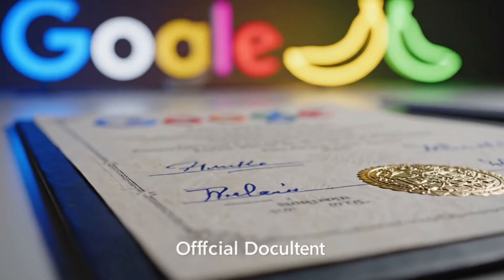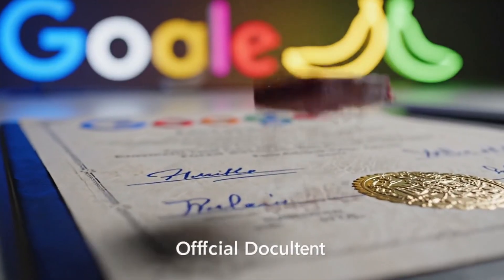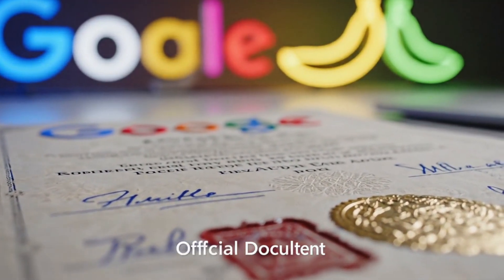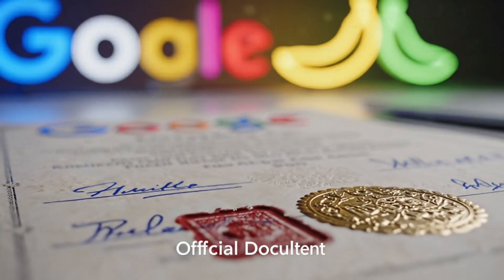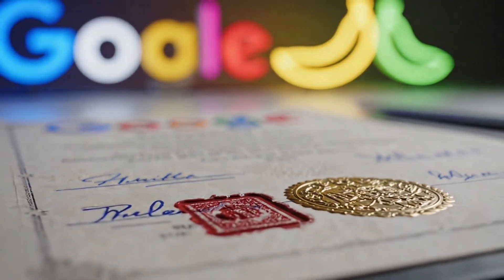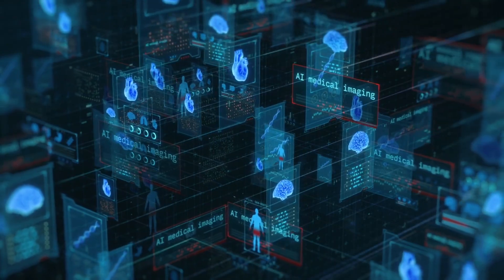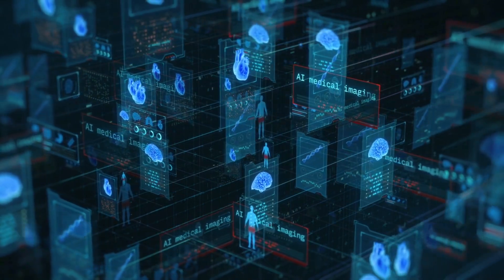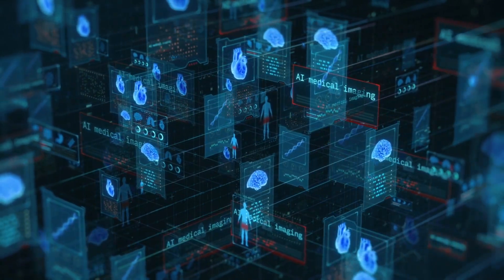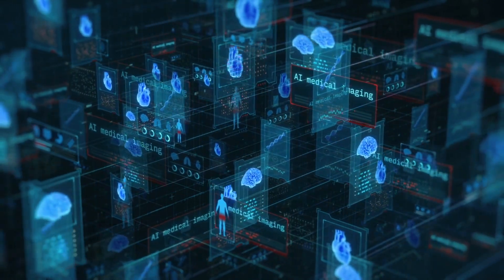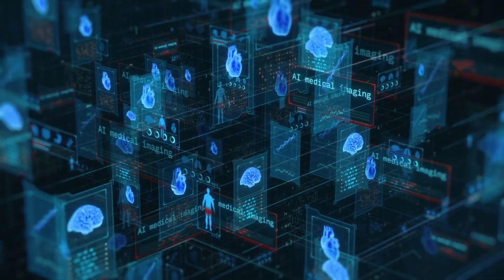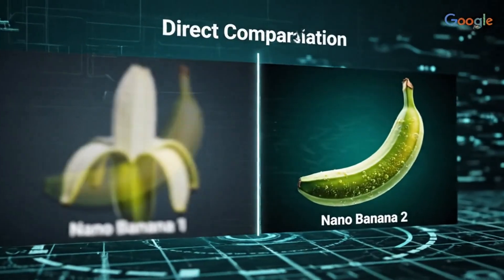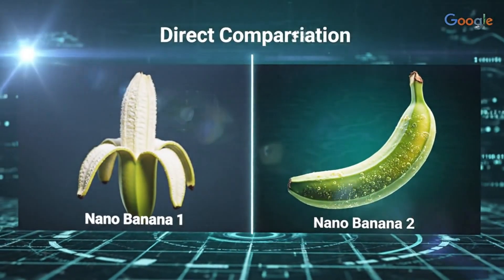The photo realism is legitimately shocking. There's this image of what looks like an official document or certificate — at first glance, it looks completely real. But if you actually read the text carefully, you'll notice inconsistencies, weird dates, nonsensical words. It's AI generated, but your brain doesn't register that immediately. That's how convincing the overall composition is.